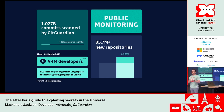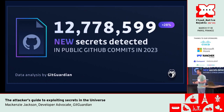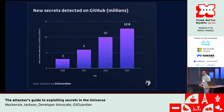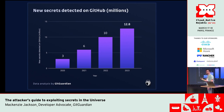The number this year was 12,778,599 secrets found in public Git repositories. This is absolutely massive and continuing to grow. When we started in 2020, we detected 3 million, and now it's increasingly going up. Some of this is because GitHub is growing and we've expanded our search, so it's not all direct native growth, but it's definitely seeing a lot more.